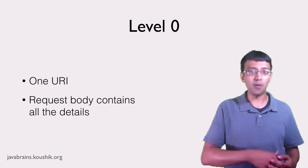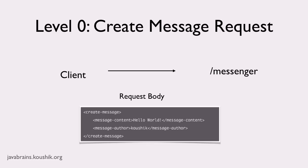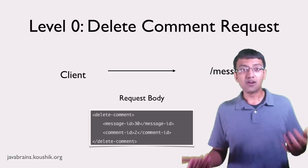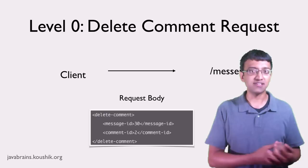The message contains both the operation that needs to be performed and the data needed for that operation. For example, XML could create a new message — there is a 'create message' portion in the request itself which has the action. A delete request sent to the same URL would similarly have a 'delete comment' in the request itself. That's how the single URL knows how to do these different things. Since the action is part of the message itself, the same URI and even the same HTTP method can be used for each operation, because all the details about the operation are in the request body. That's what SOAP does — requests are always POST with the body containing all the information.